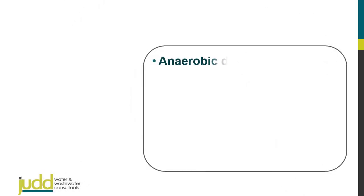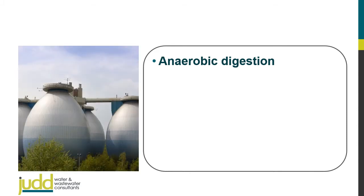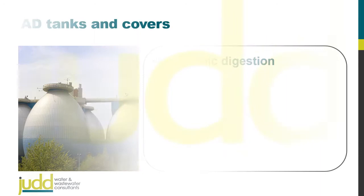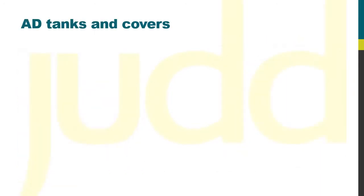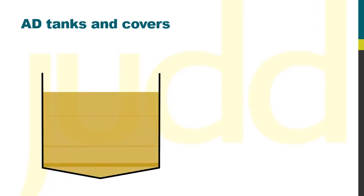Hi, this is a brief introduction to anaerobic digestion with reference to the various aspects of the process design, starting with the design of the reactors themselves. The classic shape for an AD reactor or tank is a cylinder, and like many process tanks in water and wastewater treatment, the tank normally has a conical base.